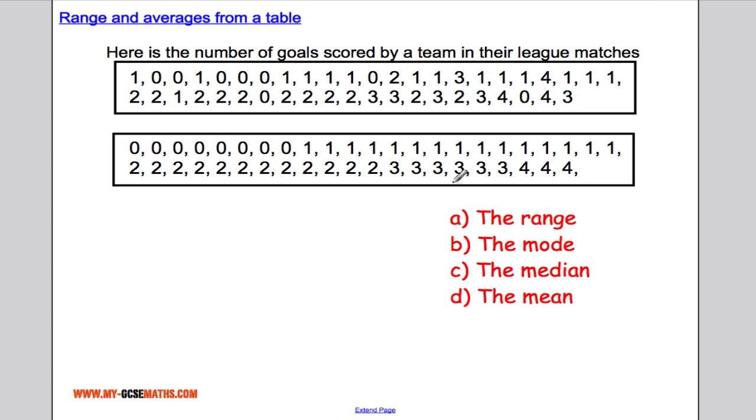The range, like we've discussed in a previous video, is the biggest value take away the smallest value, which is 4. The mode is the most common value, in this case it's 1.